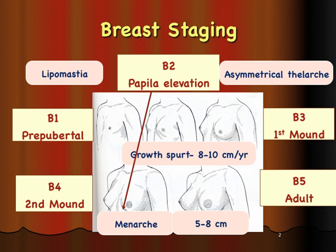The difference between thelarche and menarche is typically two years. However, in hyperandrogenic states, there could be a sudden spurt of estrogen and vaginal bleeding may happen very soon after breast development. This discordant pattern of puberty goes against the diagnosis of central precocious puberty and should indicate a hyperestrogenic state such as an ovarian cyst, hypothyroidism, or McCune-Albright syndrome.